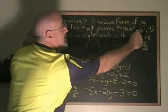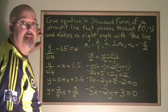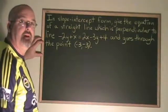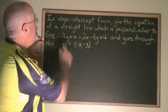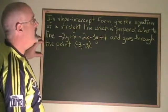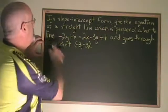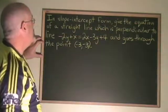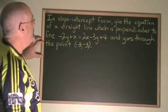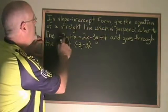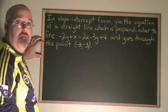And that also goes through the point (1, -1). In this next example, we are asked to use slope-intercept form to give the equation of a straight line which is perpendicular to this line and goes through the point (-3, -3). The first thing we have to do is get the first line into a form where we can figure out its slope.